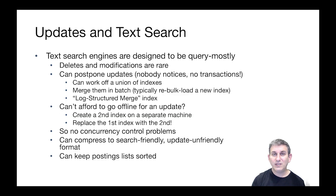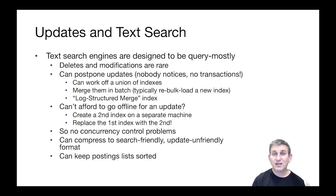This avoids what we would call concurrency control problems in traditional relational databases. One of the other keys with text search is that because they're query-mostly, we can compress the B-trees to be search-friendly and update-unfriendly. We can create B-trees where insertion would be really expensive, and that's okay because we won't insert into these B-trees. They're only used for querying, and we replace them when we want to update them. That's an option that allows us to customize to this query-mostly workload.